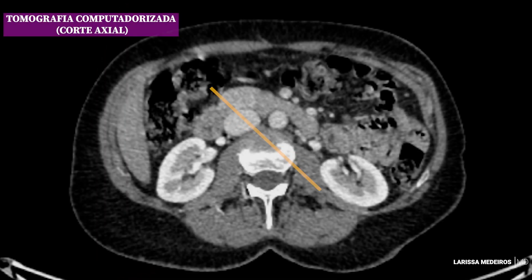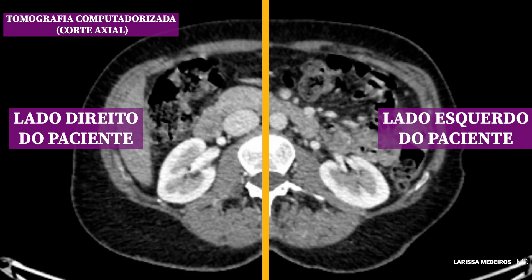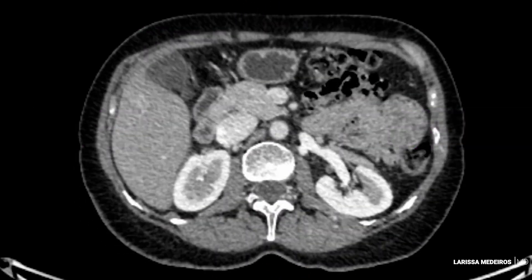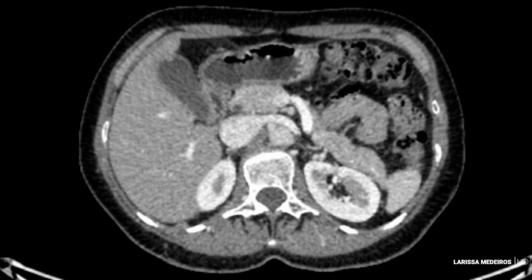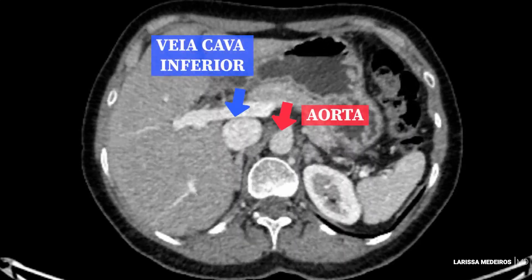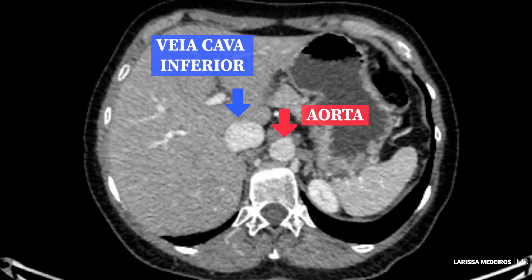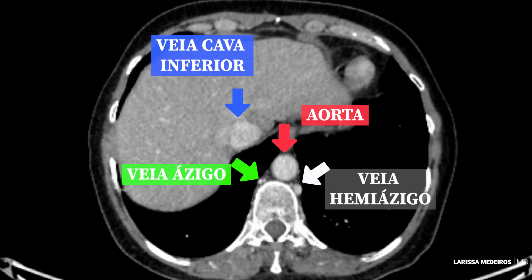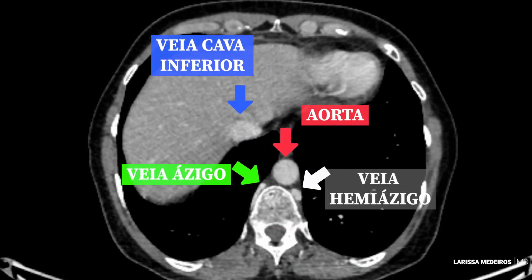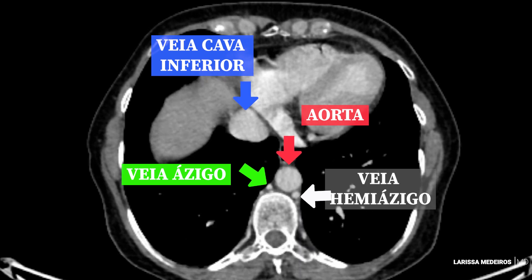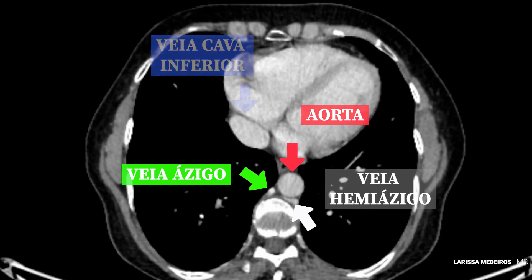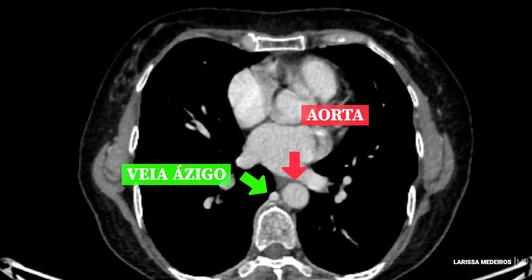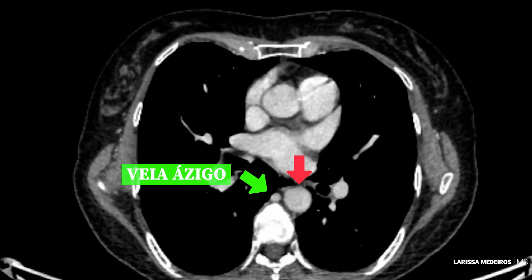Observamos aqui, novamente, a tomografia computadorizada de tórax e abdômen com contraste iodado, onde neste momento nós vamos atentar para o trajeto da veia hemiázigos, a qual estará representada pela seta branca. Observamos que ela ascende no mediastino posterior e, no nível da oitava vértebra torácica, ela cruza a linha média para desembocar na veia ázigos.